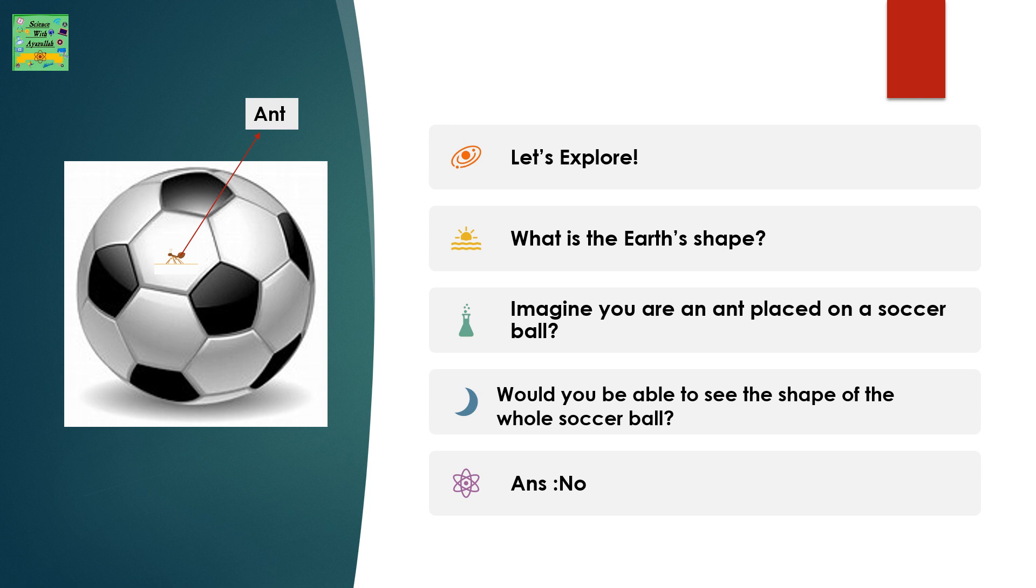Let's explore. We'll get to know what the Earth's shape is. Imagine you're an ant placed on a soccer ball. Would you be able to see the shape of the whole soccer ball being an ant? The answer is no.